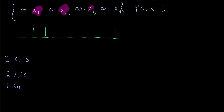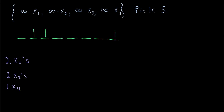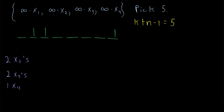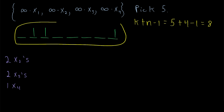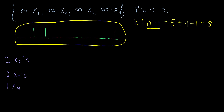Here we have one way of representing a multi-set. This set has objects x1, x2, x3, and x4, with infinitely many of all of them. So we want to pick 5, and we're allowed to pick the same one multiple times. We should have a total of k plus n minus 1 spots. k is 5 (the number of objects we're picking), and n is 4 (the number of distinct objects). So 5 plus 4 minus 1 gives us 8. Here we have 8 spaces with n minus 1, or 3, bars placed in them.